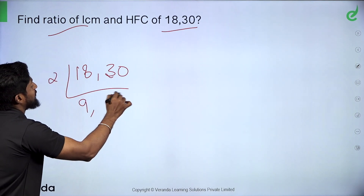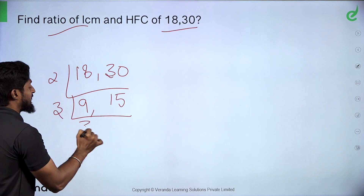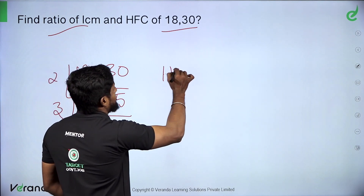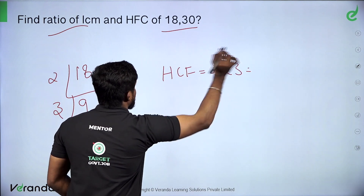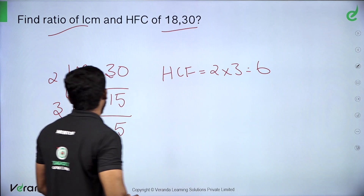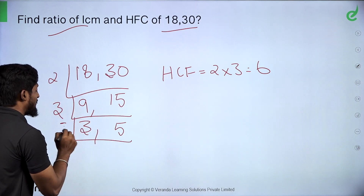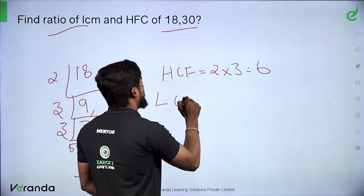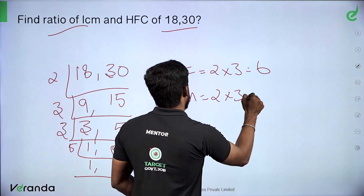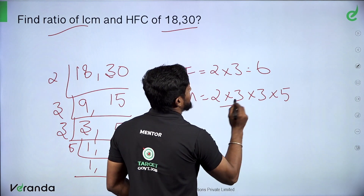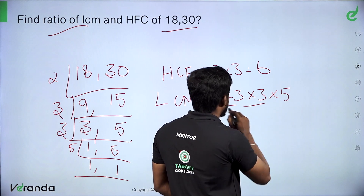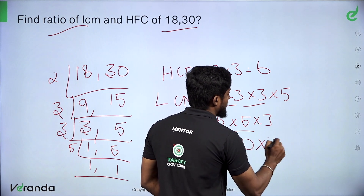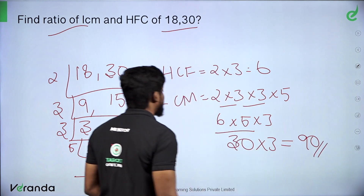Using prime factorization: 2 nines are 18, 2 fifteens are 30. With factors 3 threes are 9 and 3 fives are 15. HCF is equal to 2 into 3, giving HCF of 6. LCM is 2 into 3 into 3 into 5, giving 6 fives are 30, into 3 is 90. So LCM is 90.